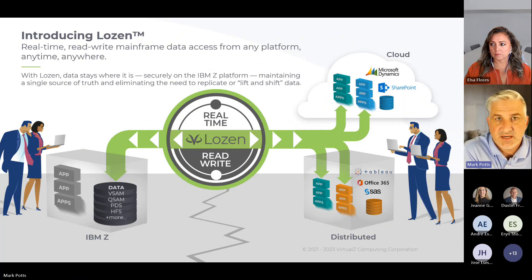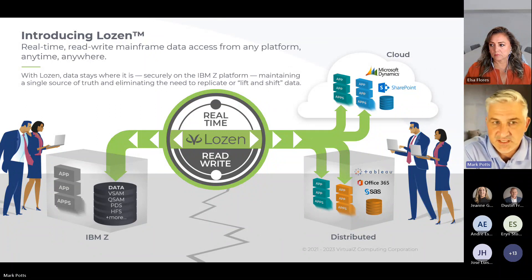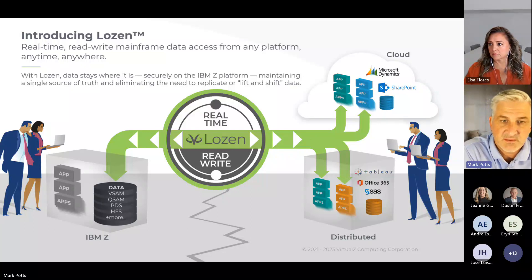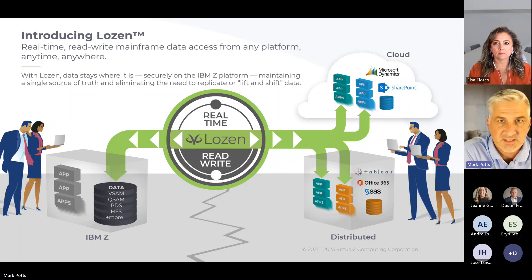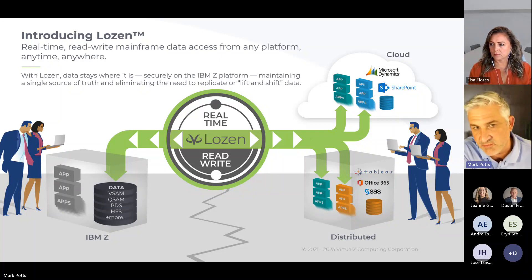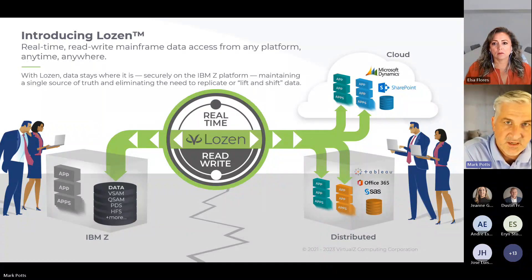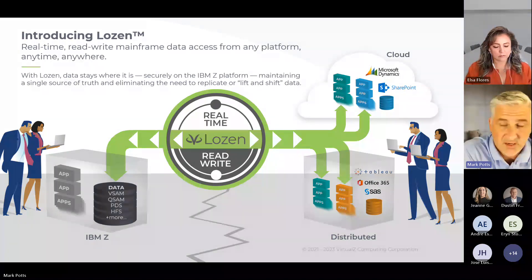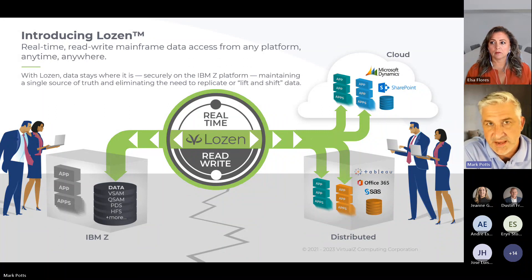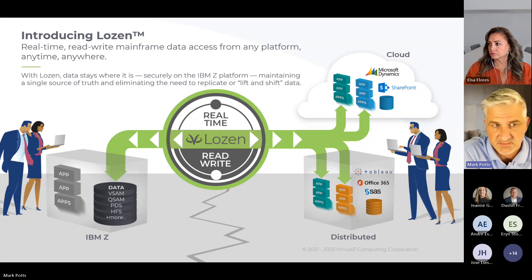What Lozen does is eliminate that complication — that extra effort and cost to keep those ETL jobs and change data capture programs running. We are simplifying that by creating direct, simple access to your VSAM and QSAM data existing on the mainframe. So as you move an application off, instead of moving the data with it, you keep the data where it is, connect to Lozen — which runs in a ZIP engine, so it's ZIP eligible. It's not going to significantly, if at all, increase your MIPS, providing you direct access.